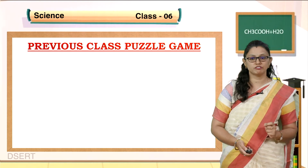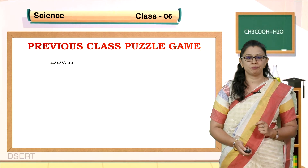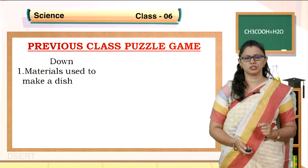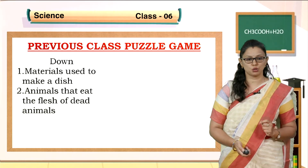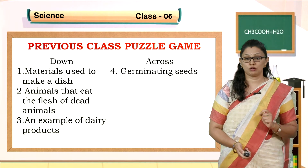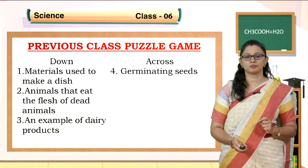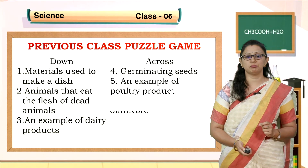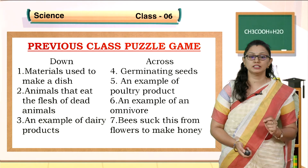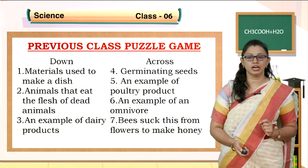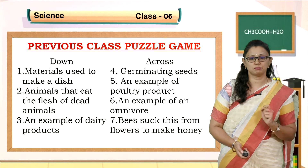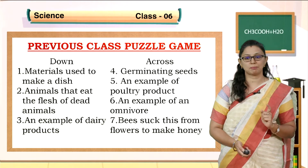Whatever you have learned, I have given some work also to do. So the clues are: materials used to make a dish, animals that eat flesh of dead animals, an example of dairy products, across germinating trees, an example of poultry products, an example of omnivore, beans dug from flour to make onion. Solve this puzzle children by using your knowledge of Chapter 1.